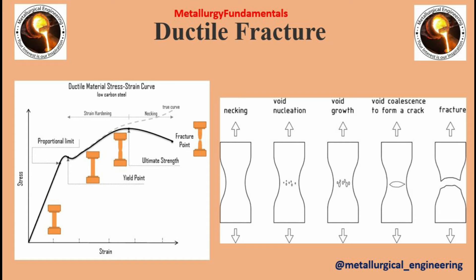Before the fracture reaches the surface, however, it suddenly changes direction from generally transverse to about a 45-degree angle. It is this slant fracture, frequently called a 'shear lip,' that forms the cup and cone shape characteristic of many tensile fractures of ductile metal. This slant fracture is useful for the study of many fractures, as it represents the end of the fracture process at that location.